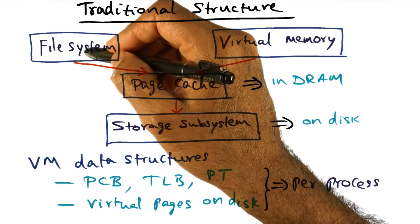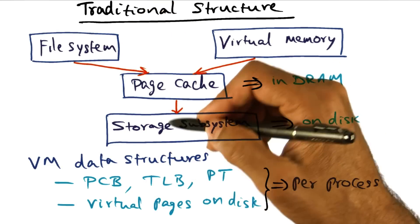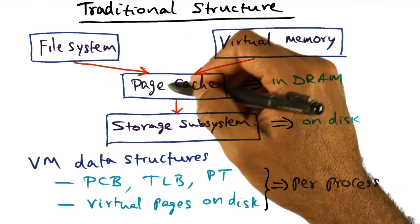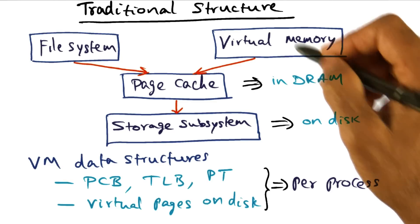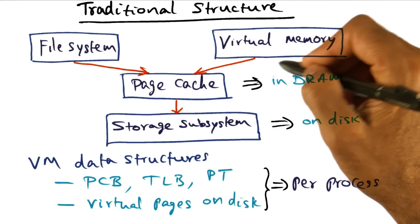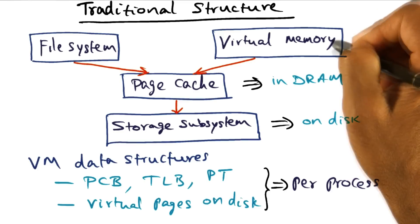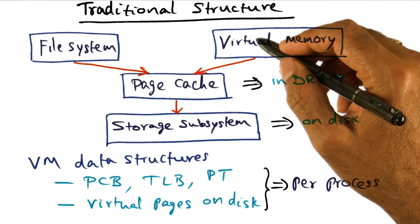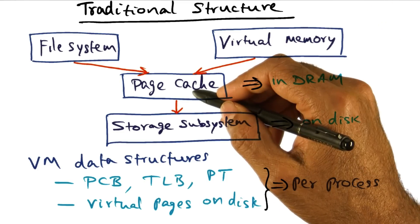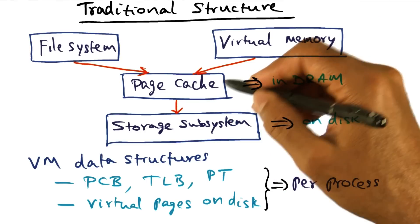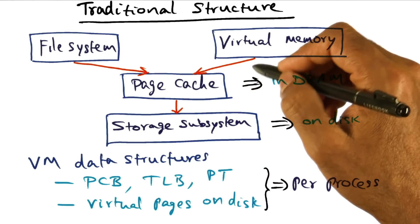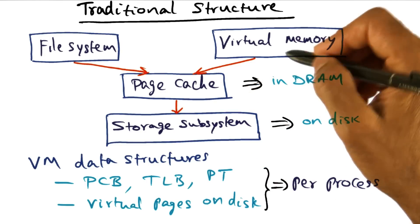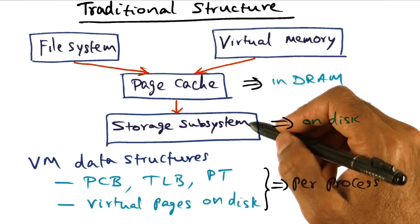The file system has opened files explicitly from the storage, and they live in the page cache that is in the physical memory. Similarly, processes are executing in virtual memory, and the virtual memory of every process has to be backed by physical memory. Therefore, the page cache in DRAM contains the contents of the virtual pages, and all these virtual pages are in the storage subsystem.